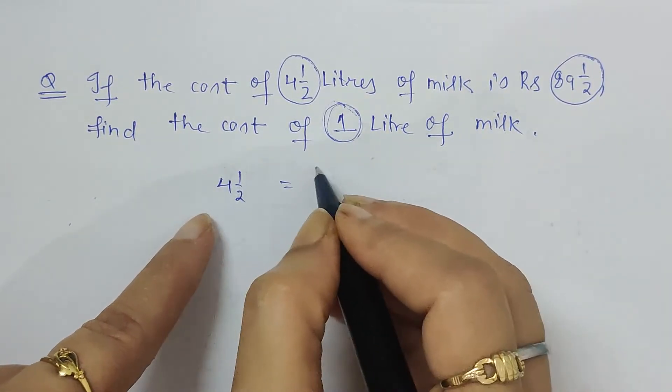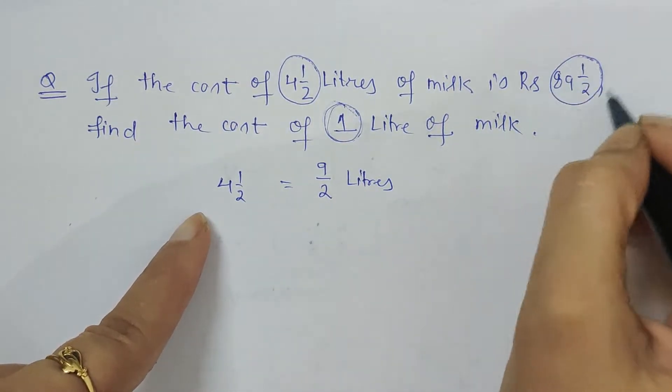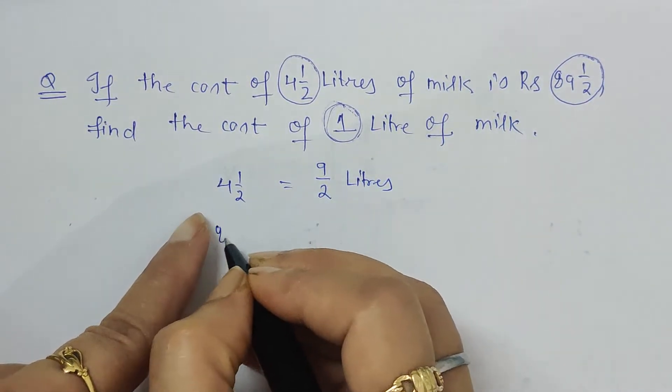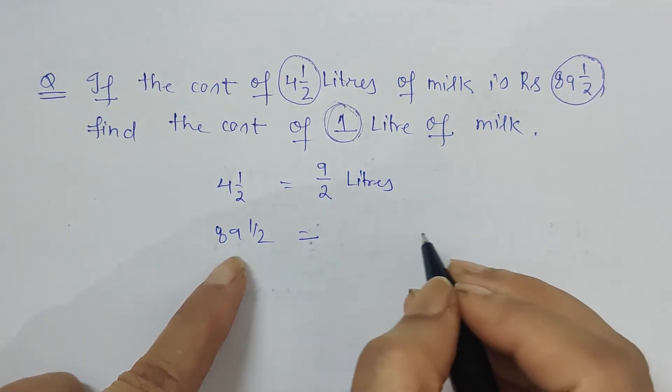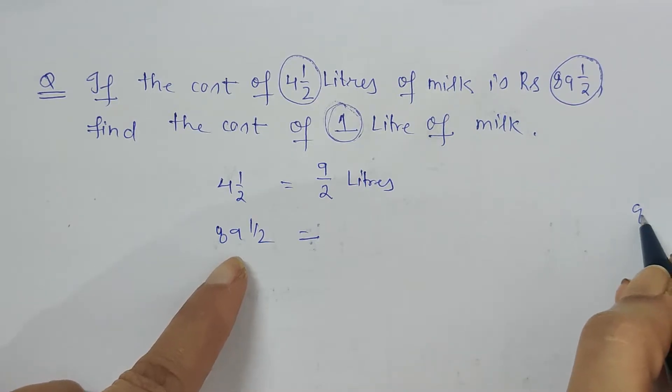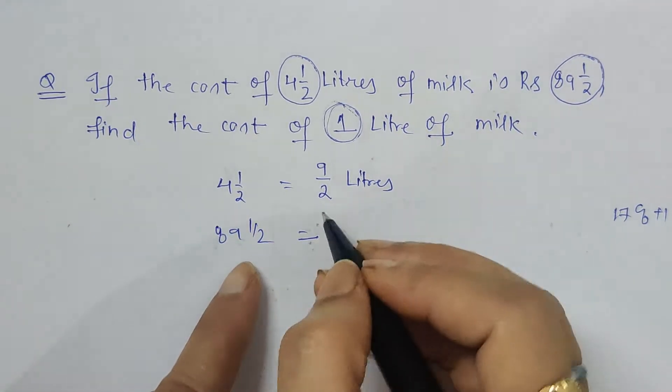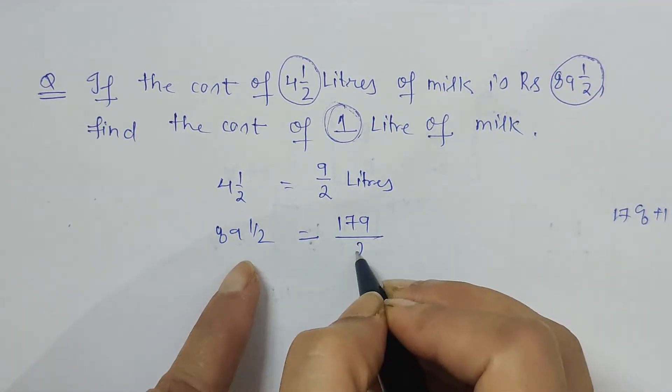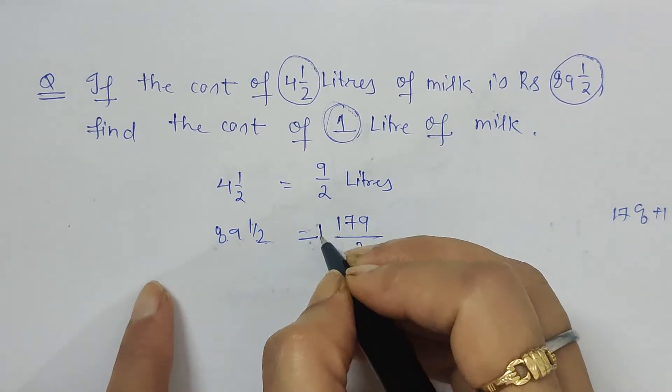And again, 89 and a half can be written as two nines, 18. To it is 16 plus 1, 178 plus 1 is 179 upon 2. This into this plus 1 upon whatever is the denominator. So this is the rate given to us for this much quantity.